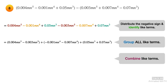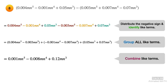Last, combine like terms using addition and subtraction. And the final answer is 0.001mn raised to 5 minus 0.008mn raised to 4 plus 0.12mn raised to 5.